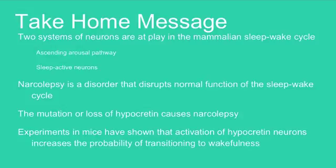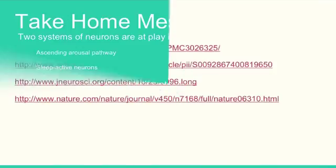To sum everything up: there are two systems of neurons at play in the mammalian sleep-wake cycle — the ascending arousal pathway, which is active during wakefulness, and the sleep-active neurons, active during sleep. Narcolepsy is a disorder that disrupts the normal function of the sleep-wake cycle and can be caused by mutation or loss of the neuropeptide hypocretin. Experiments in mice have shown that activation of hypocretin neurons increases the probability of transitioning to wakefulness; thus, hypocretin is likely a part of the ascending arousal pathway.